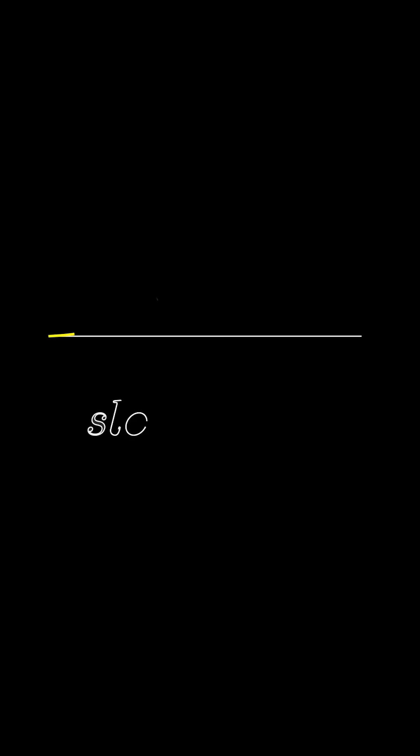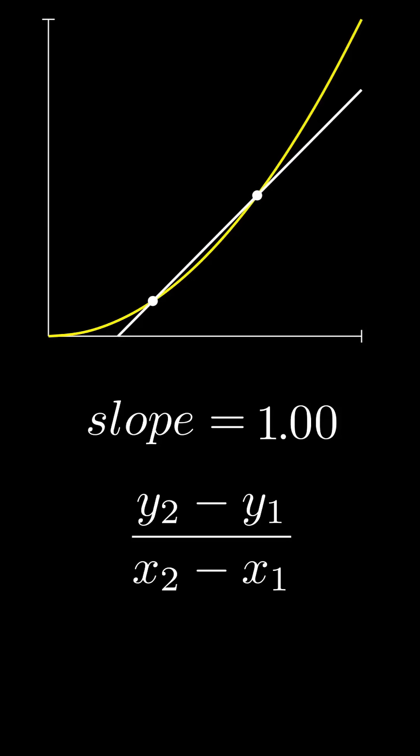Except there's one problem. How do you find the slope at one point of a nonlinear function? You can find the average slope between two points, but how do you find the slope of a singular point?